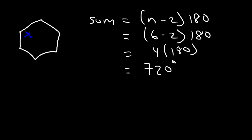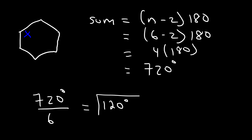So now we're going to take 720 and divide it by the number of sides of a hexagon, which is 6. 720 divided by 6 is 120. So that's the measure of each interior angle inside the hexagon — every angle is 120 degrees.